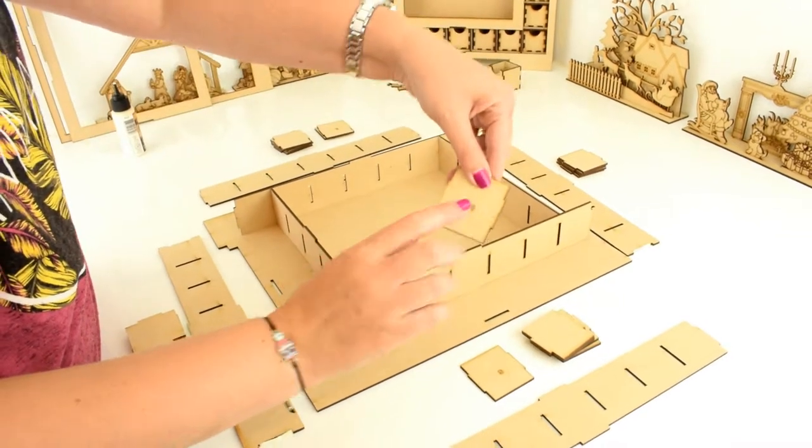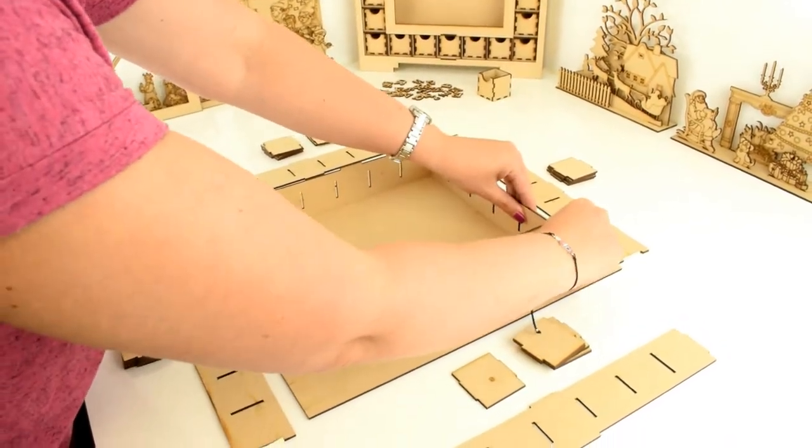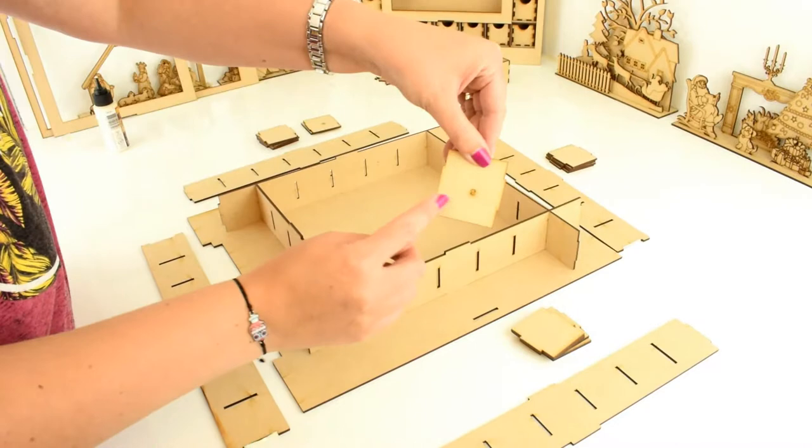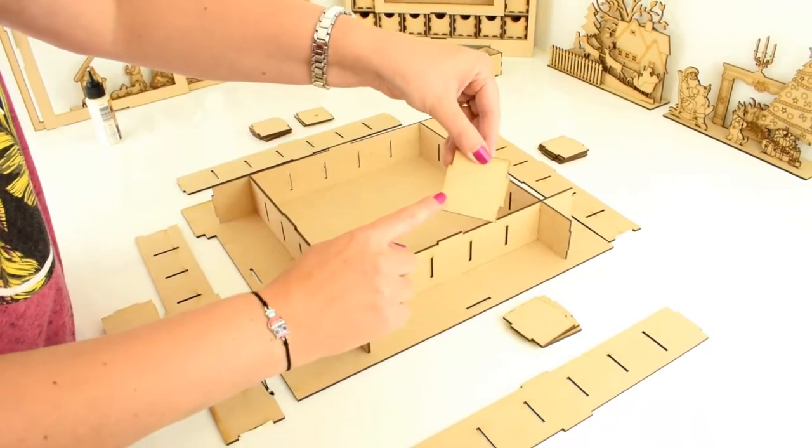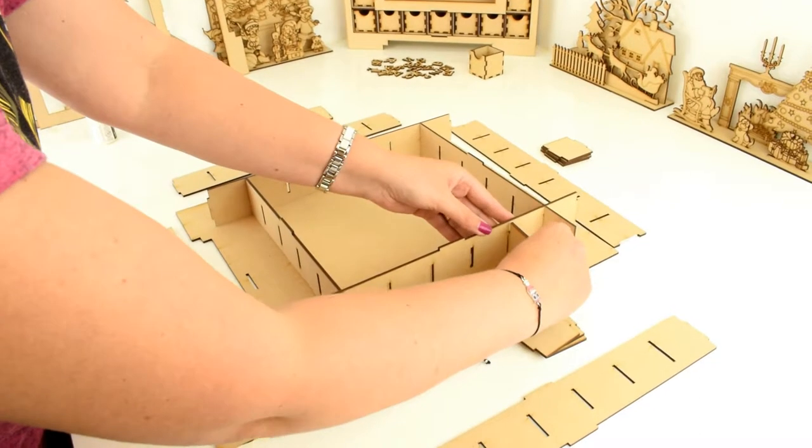You then want to take the small squares that have the S on, slot this at the top and again one at the bottom. The other plain square pieces will go in between.